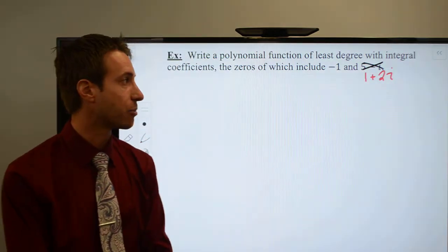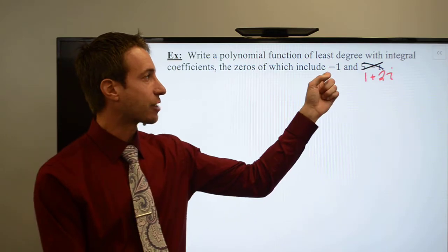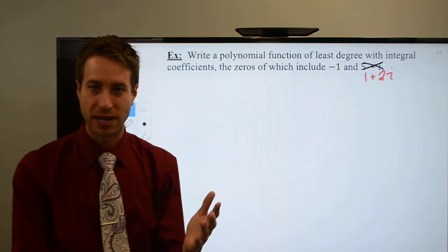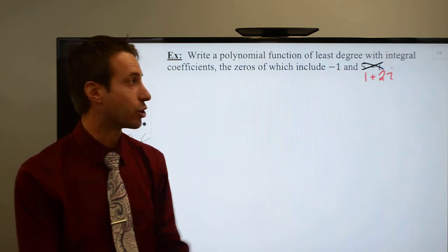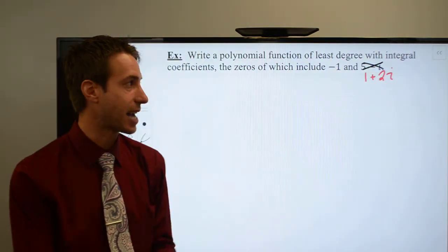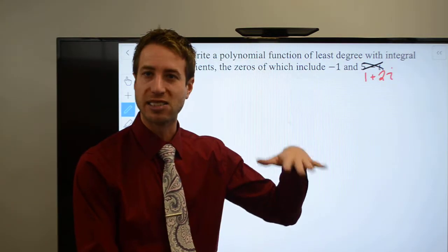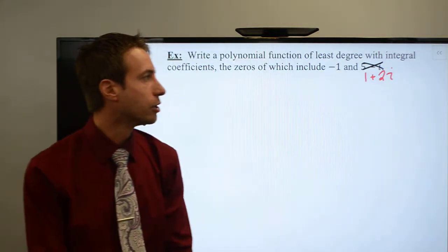And again, I apologize. I got typos flying around all over the place. Actually, what I had written was the exact same problem that we just did, and that's ridiculous. We want to do a new one. So go ahead and cross out that 5 minus i because we did that in the last problem. We're going to make our complex zero 1 plus 2i.